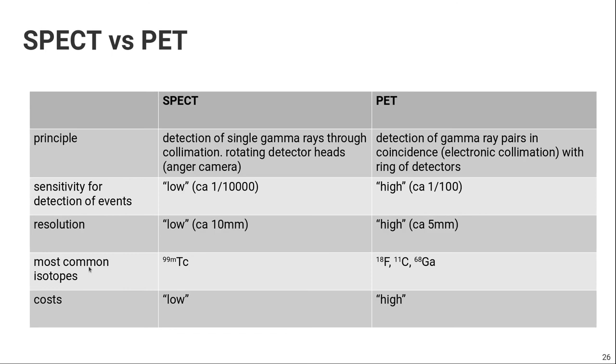The most common isotopes that are used in SPECT is by far 99 metastable technetium. And in PET, the classical famous positron emitters are F-18, carbon-11, and also gallium-68 lately. An important difference is also if you calculate the costs that are needed to basically do a SPECT or PET examination. The costs of a SPECT scanner are much lower than the costs of a PET scan. So that's why if you go to any nuclear medicine department, you will still see many SPECT scanners that are used because they're just more cost effective.